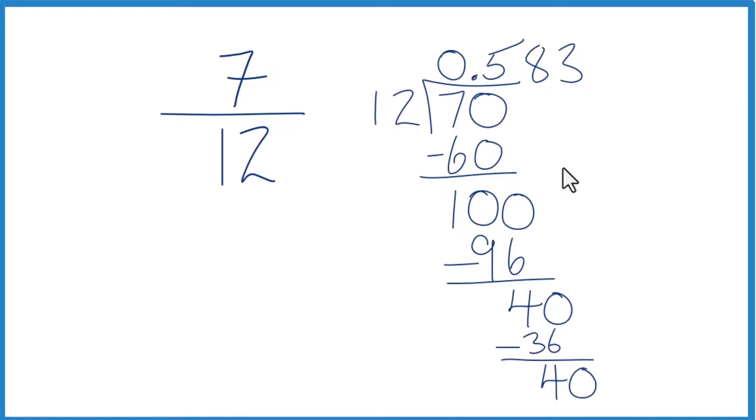Then we call that 40. Move over 1. 3 times 12 is 36. When we subtract, we'll get 4 again. So this 3 is just going to keep repeating.